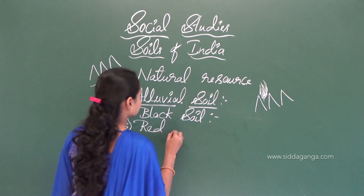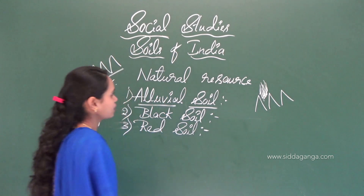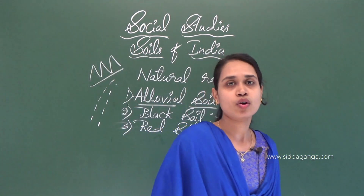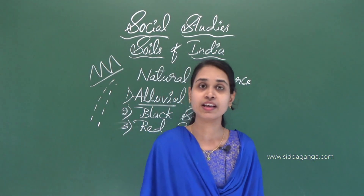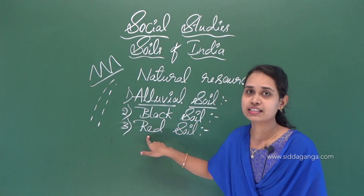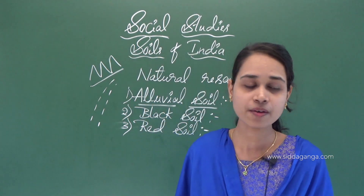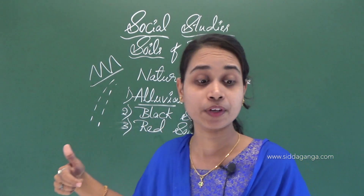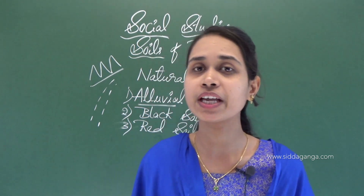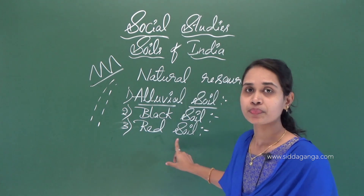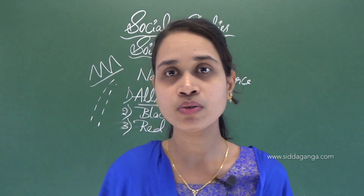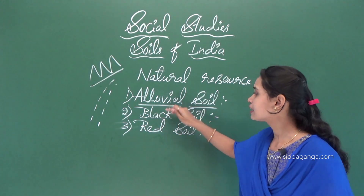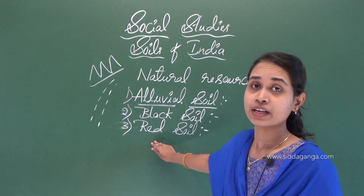The next type is red soil. It is red in color, as its name indicates. This type of soil is found in parts of Maharashtra, Madhya Pradesh, Orissa, Jharkhand, Telangana, Andhra Pradesh, and Tamil Nadu. Compared to alluvial soil, red soil is not very fertile.